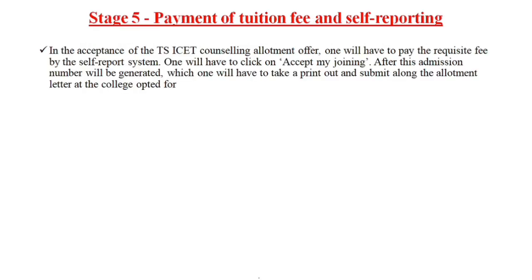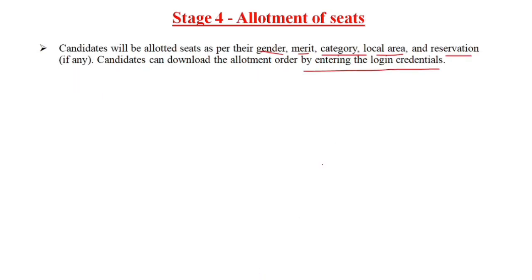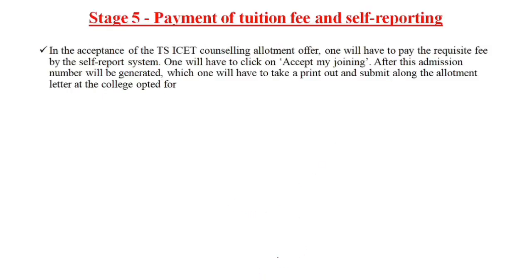Stage five is payment of tuition fee and self-reporting. First, you accept the allotment order, then you have to pay the college requirement and tuition fee. After that, you need to complete self-reporting, and an admission number will be generated. Take a printout of that admission number and submit it along with the allotment letter — that is the most important step.